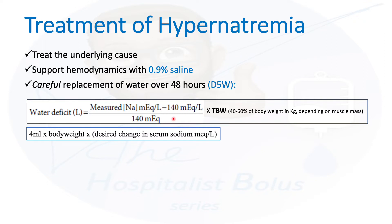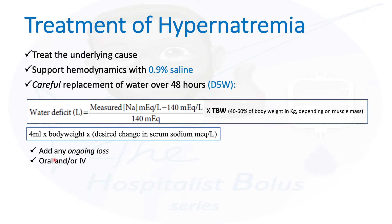One important note: you have to add any ongoing losses. The 4 liters calculated might actually need to be 5 or 5.5 liters if there are other losses still occurring during the 48-hour repletion period. This is probably the most common reason hypernatremia is under-corrected — we tend to underestimate the amount of water loss. Remember to add ongoing losses.